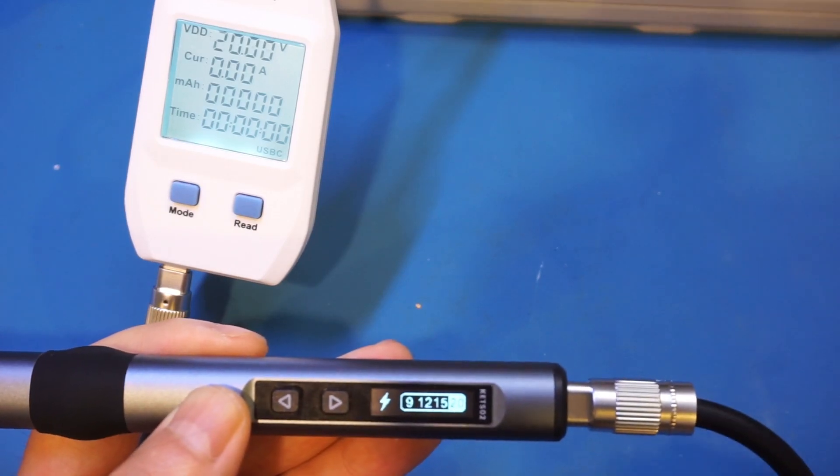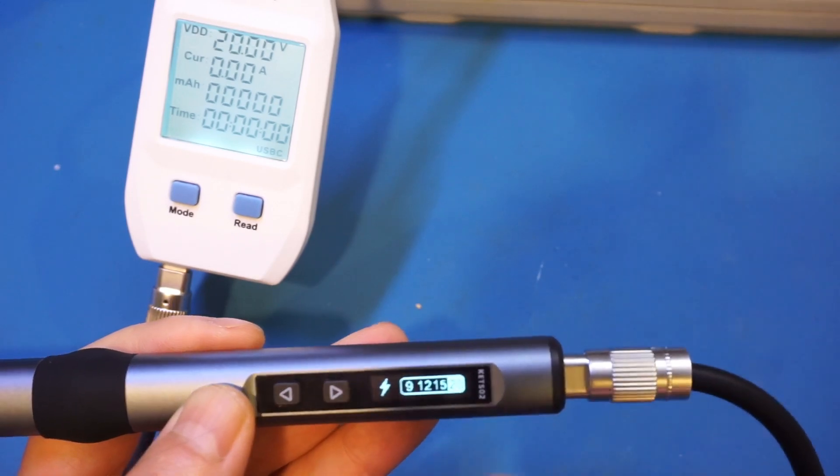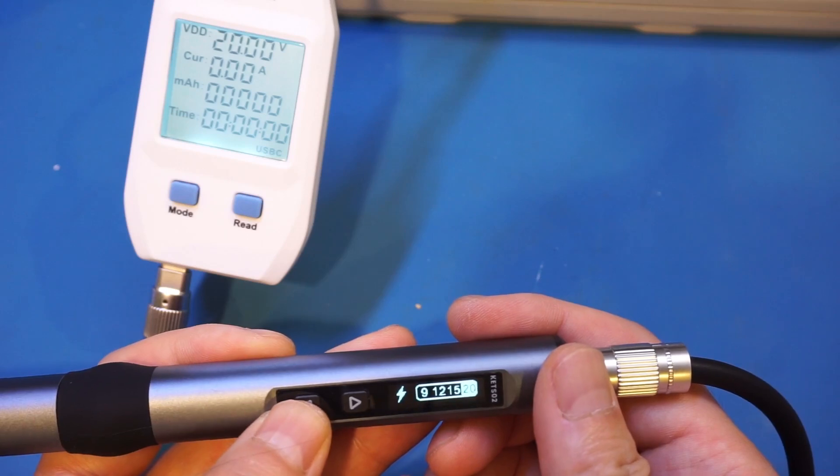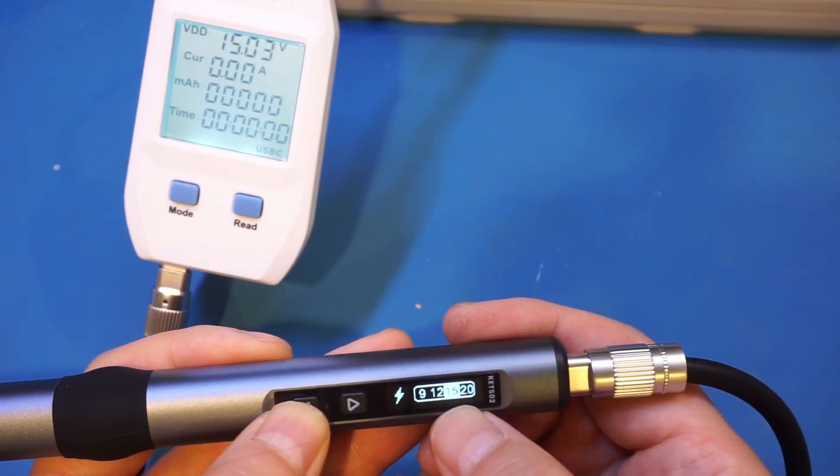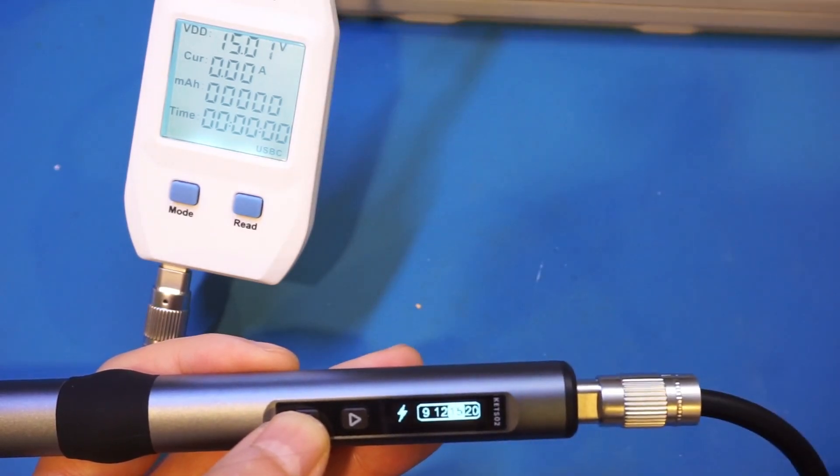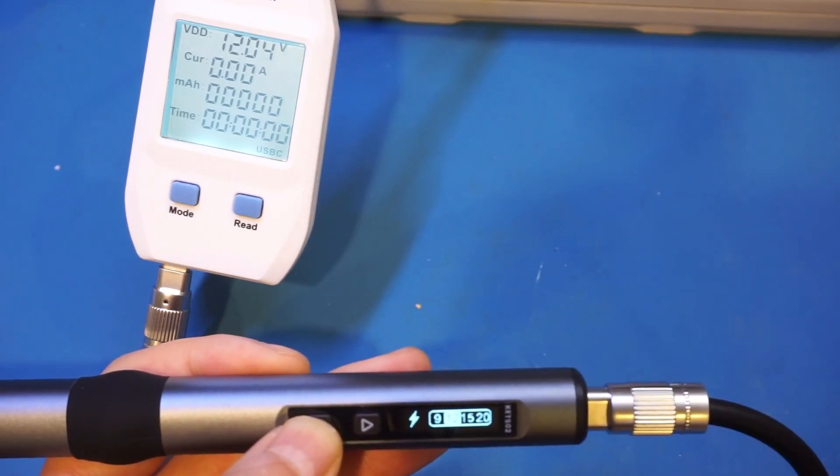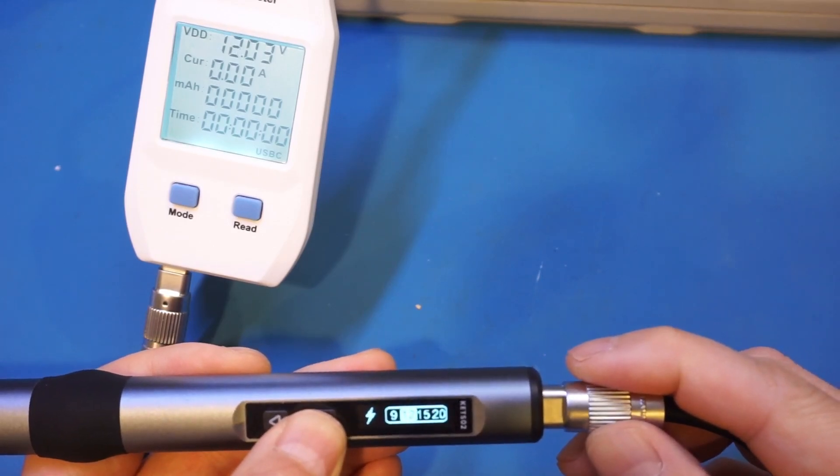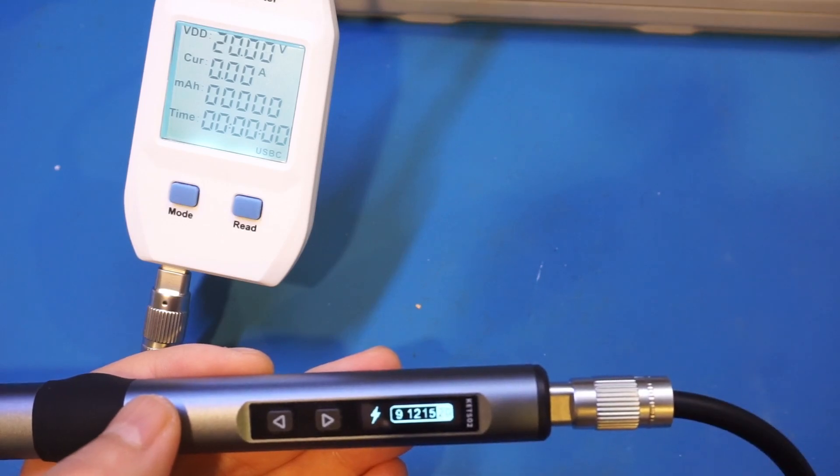Let me demonstrate. I just hooked up a USB tester. You can see right now the input voltage is 20 volts. Let me adjust the voltage - now we're setting it to 15 volts and the input voltage drops to 15 volts. If we do 12 volts, the input voltage drops to 12 volts, and 9 volts. This feature is definitely helpful if you don't have a power supply that can deliver the required 65 watts output power.